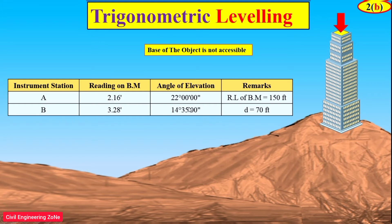From instrument station B, the staff reading on benchmark is 3.28, and the angle of elevation to the top of the building from instrument station B is 14 degrees 35 minutes. The reduced level of the benchmark is 150 feet, and the distance between station A and station B is 70 feet.